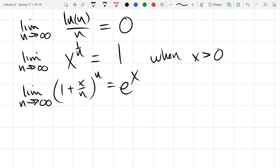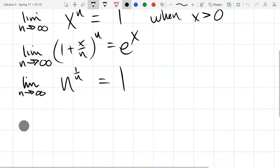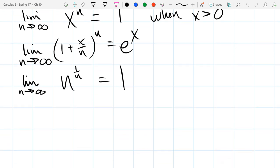Now this limit is n to the 1 over n power. And this one is also going to be 1. I think we did something like this. Use L'Hopital's rule. This is where you use the natural log function. So you can turn that power into a product.